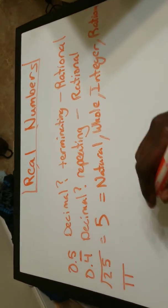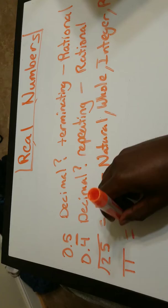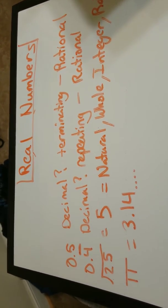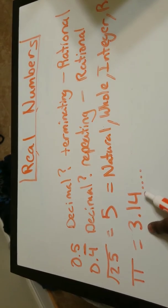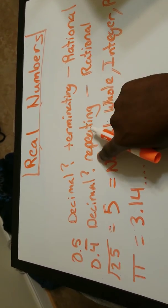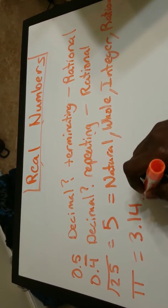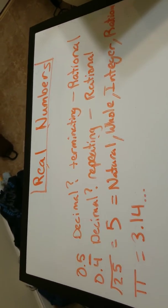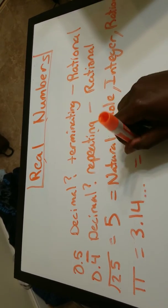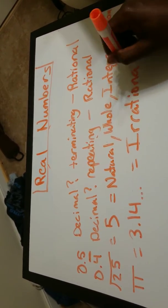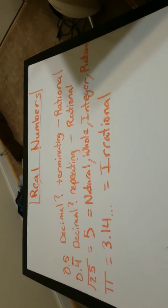All right. Last, we have pi. That's going to give us 3.14, and it's just going to keep going. So this is a decimal. Is it repeating? It never repeats. Is it terminating? It never stops because we did the three dots. So in this situation, this will be irrational. All right.